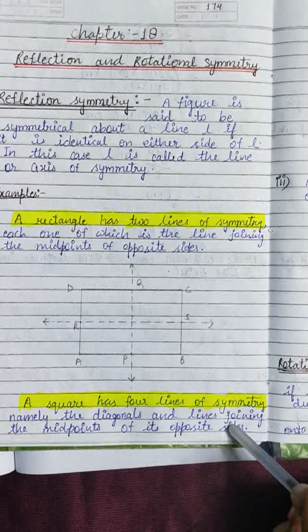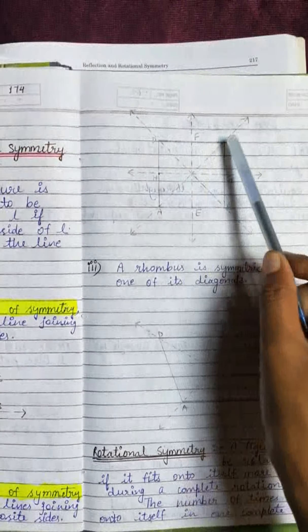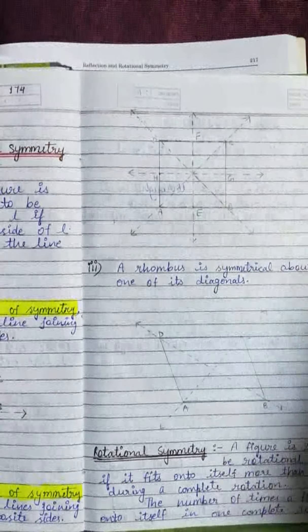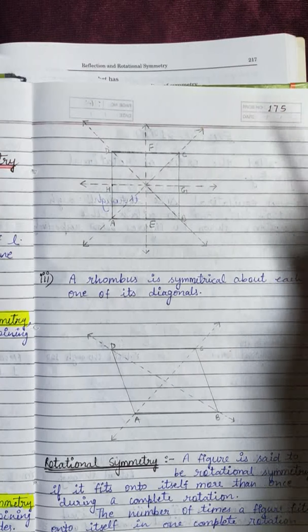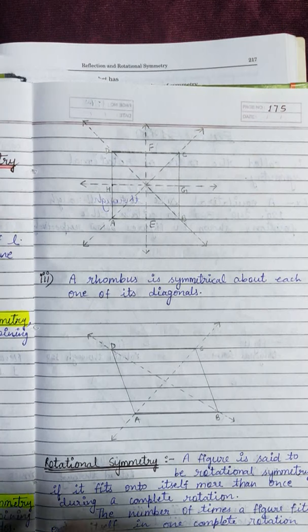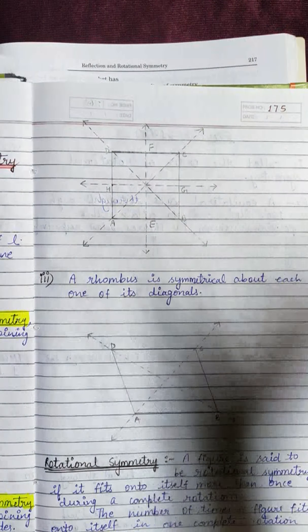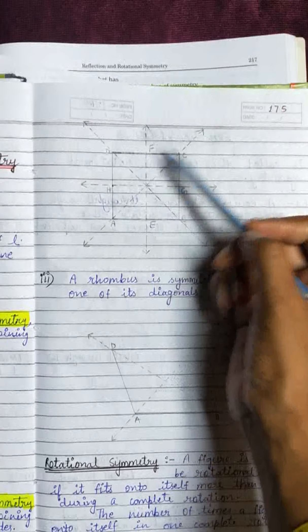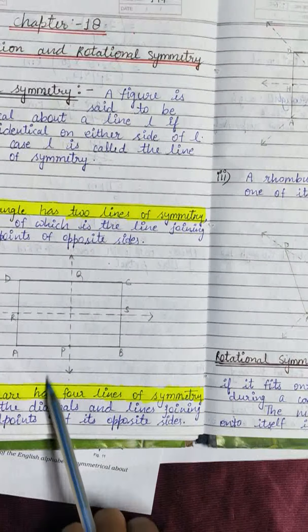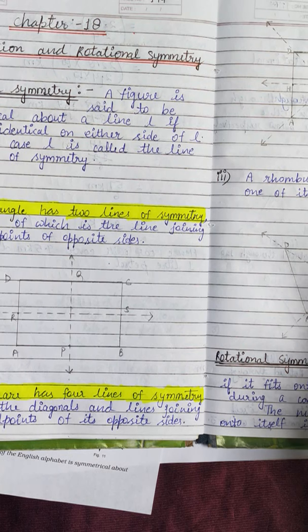A square has four lines of symmetry — two pass through the midpoints of opposite sides, and two are along the diagonals. If someone asks you to draw lines of symmetry in a square, you should know there are four: two through midpoints of sides and two along diagonals. Similarly, a rectangle has two lines of symmetry.